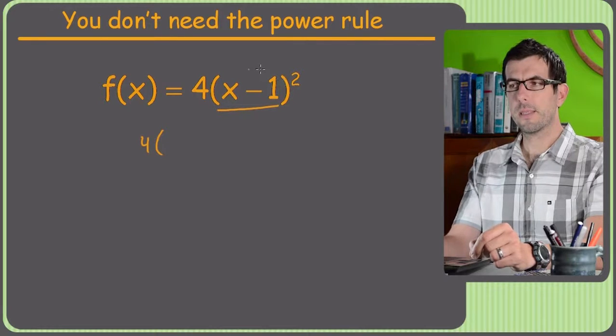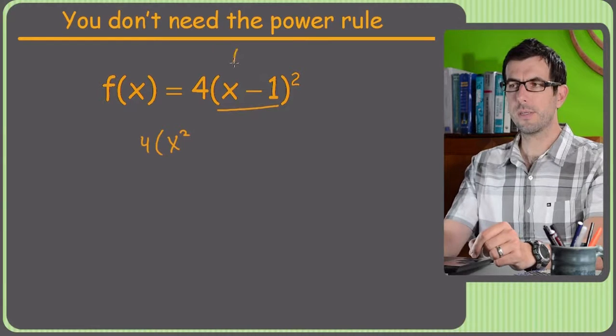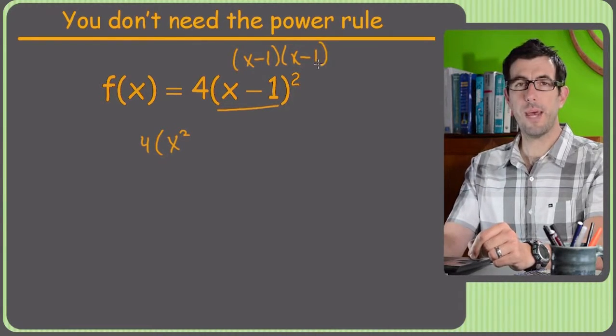But then I'll have to foil it out. So I'll get x squared. And if you're not good at taking foil of squares, you can just write down x minus 1 times x minus 1, and just foil it out that way.